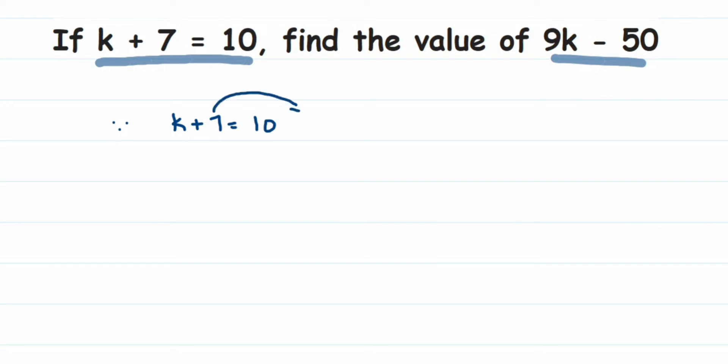7 is positive, so when you transpose it becomes negative. 10 minus 7 equals 3, so we got the value of k equals 3.